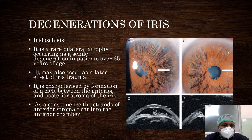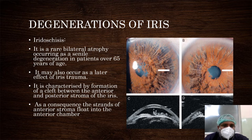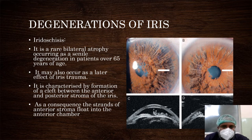This condition is called IIDAS. It is a rare bilateral atrophy occurring as a senile degeneration in patients over 65 years. It may also occur as a late effect of iris trauma. It is characterized by formation of a cleft between the anterior and posterior stroma of the iris, and as a consequence, the strands of anterior stroma float into the anterior chamber, as seen clearly in this picture.